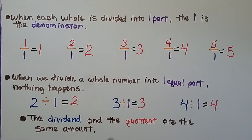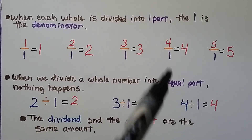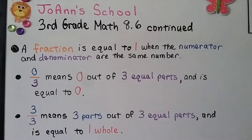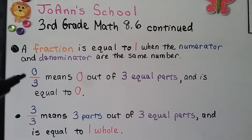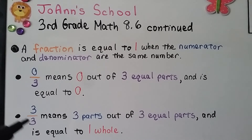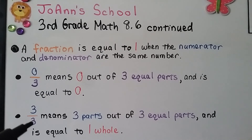When we divide a whole number into one equal part, nothing happens — it stays the same. The dividend and the quotient are the same amount. Two divided by one is equal to two, three divided by one is equal to three, four divided by one is equal to four. A fraction is equal to one when the numerator and denominator are the same number. If we have zero-thirds, it means we have zero out of three equal parts, and that's equal to zero. Three-thirds means three parts out of three equal parts, and that's equal to one whole — if we ate all three parts of a candy bar, we ate the whole candy bar.